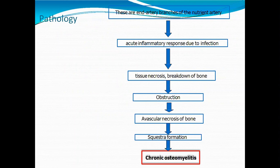The cause of infection leads to tissue necrosis and breakdown of the bone. Obstruction creates avascular necrosis of the bone — meaning the vascular type of necrosis reduces blood supply to the bone.